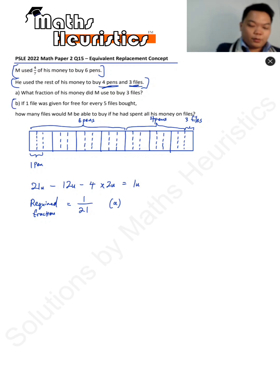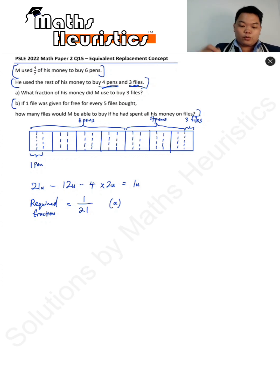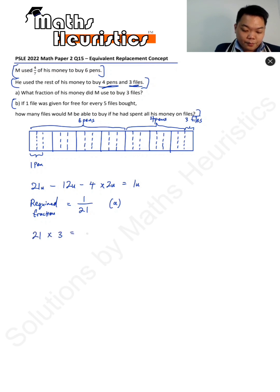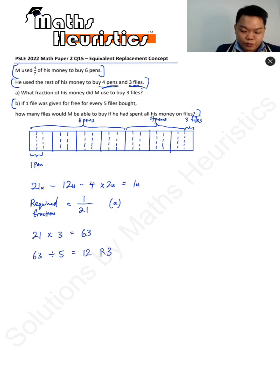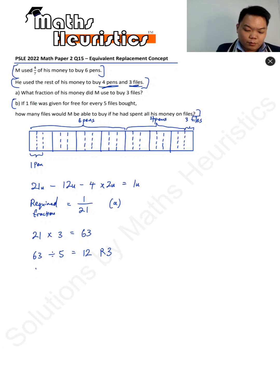For Part B, if 1 foul was given free for every 5 fouls bought, how many fouls would M be able to buy if he spent all his money on fouls? If he spent all his money on fouls, he would be able to buy 63 fouls in total. For every 5 fouls bought, 1 foul is given free. If we take 63 divided by 5, we get 12 remainder 3. That means there are 12 complete groups of 5, triggering the 1 foul bonus 12 times. Therefore, he would be able to get a total of 75 fouls.